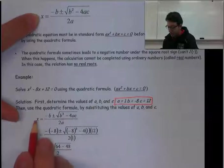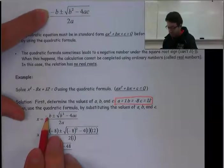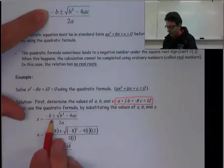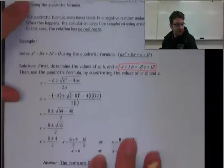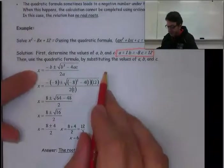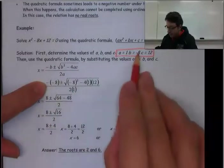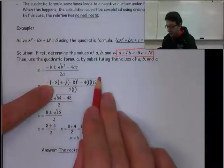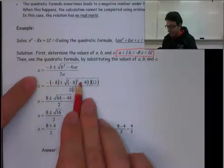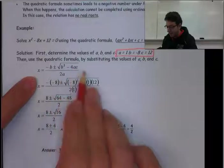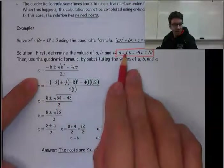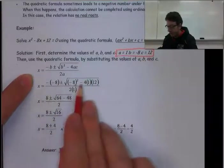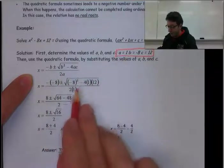Our quadratic formula is x = -b ± √(b² - 4ac) all over 2a. When we take our coefficients, we have negative b, so negative and -8, plus or minus the square root of (-8)² minus 4(1)(12), divided by 2(1).